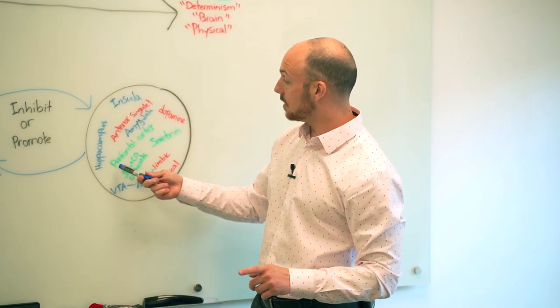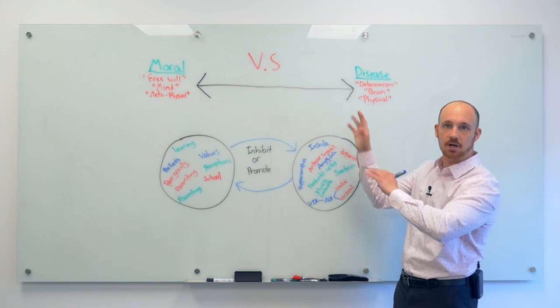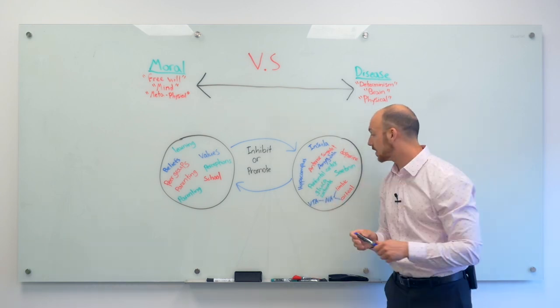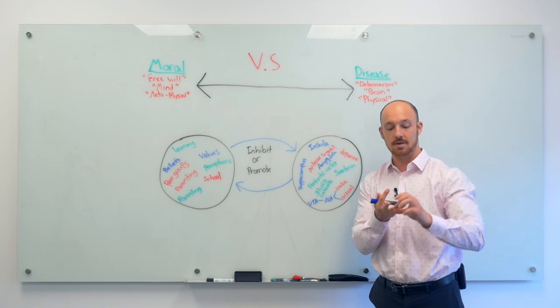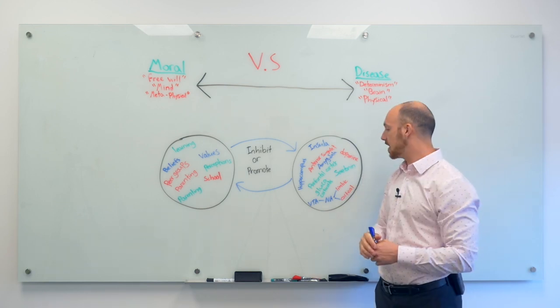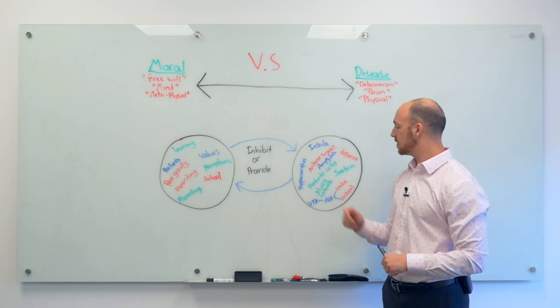Then obviously the prefrontal cortex. We should not ever talk about addiction and brain function without mentioning the prefrontal cortex. Executive function, doing the right thing when it's the hard thing to do, impulse control - all these areas. It's the person. Yeah, it's the executive. It's the president. It's the prime minister.